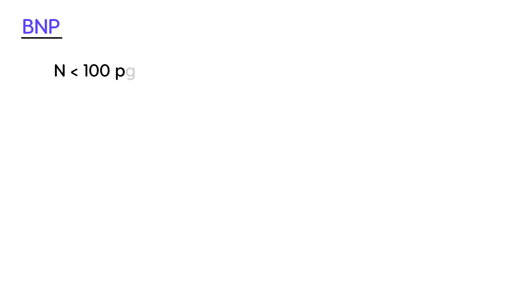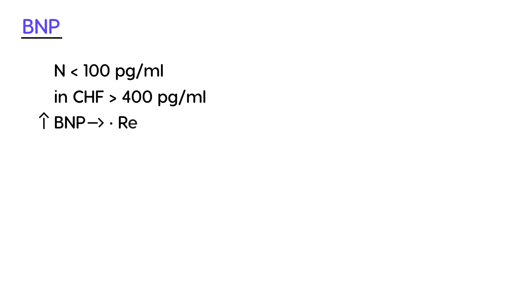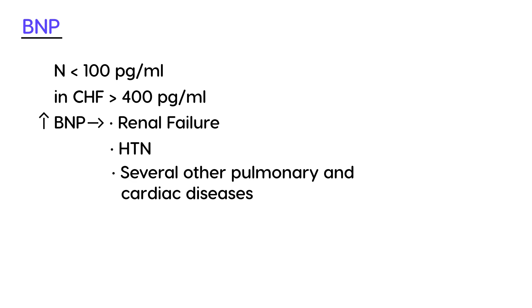Going back to BNP — B-type Natriuretic Peptide — the normal value is less than 100 pg/mL, and in CHF it will be greater than 400. It is important to remember that BNP can also be high in several other medical conditions: renal failure, hypertension, various pulmonary and cardiac diseases, and it can also be high in older patients, female patients, and patients with liver cirrhosis.